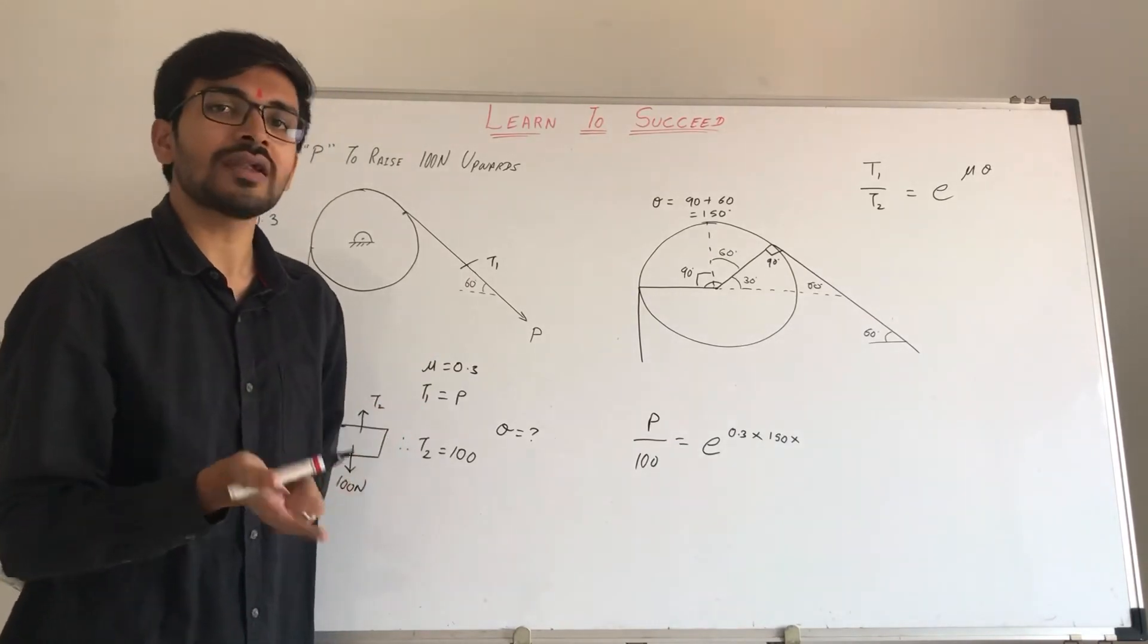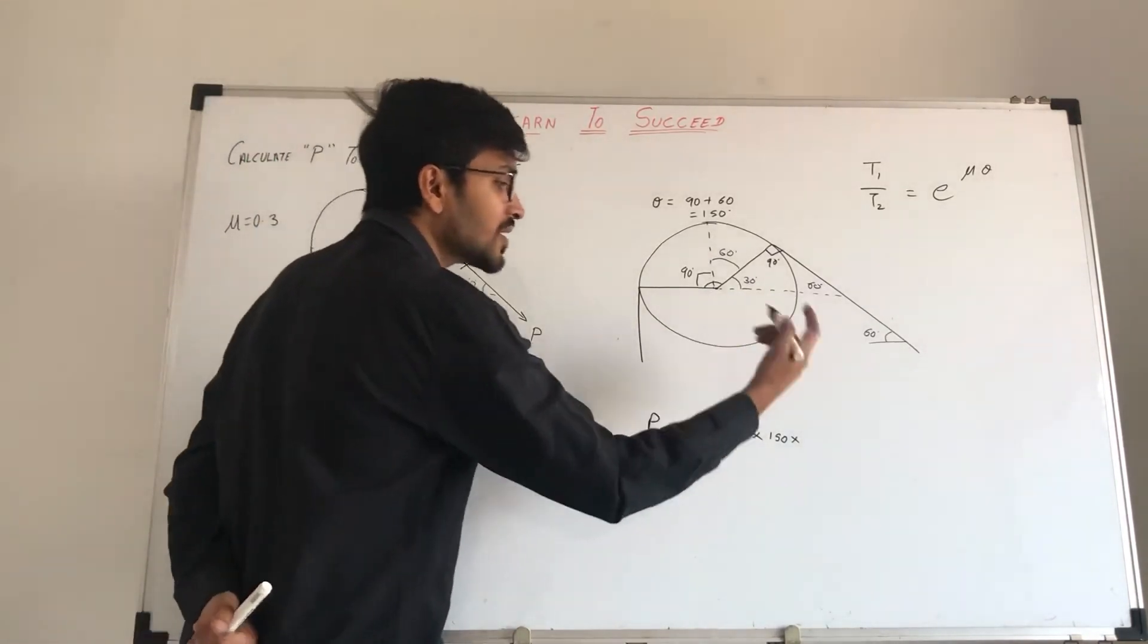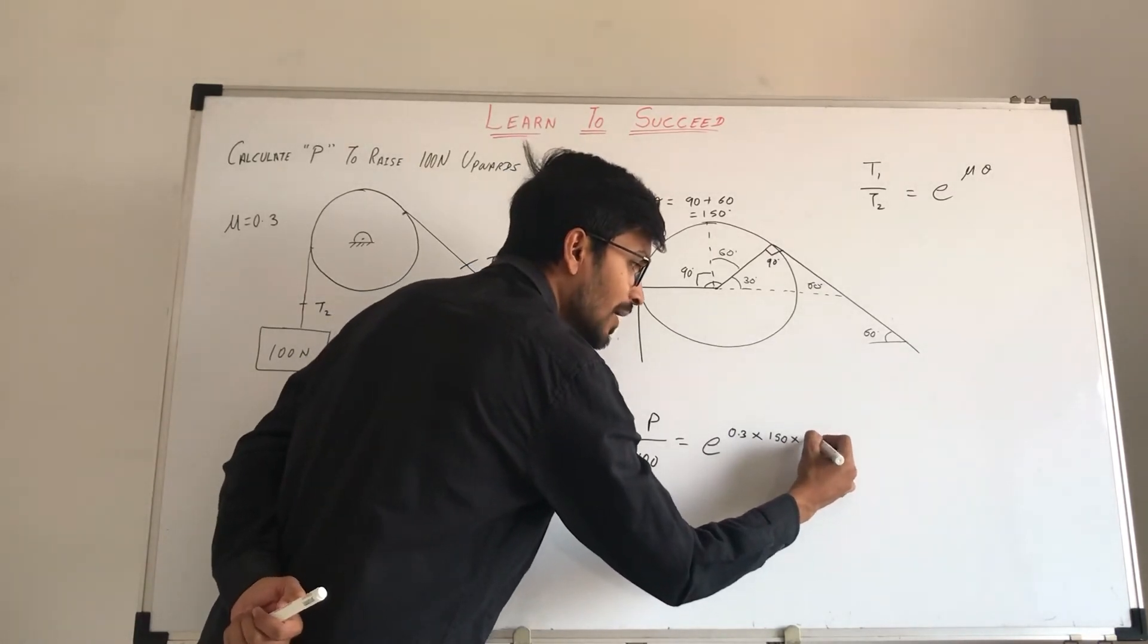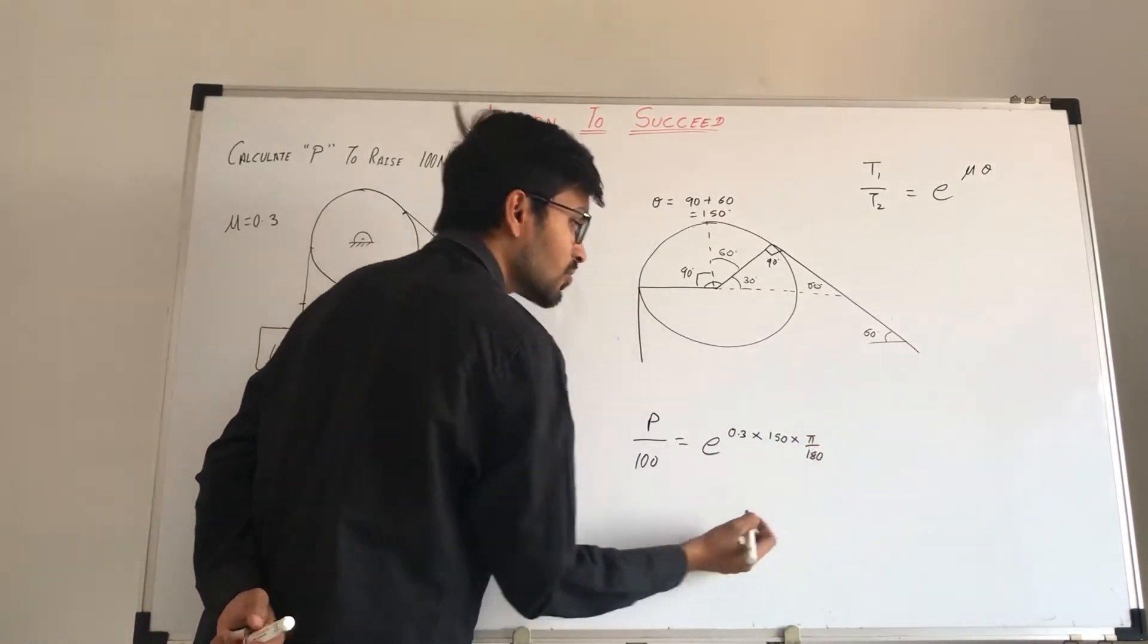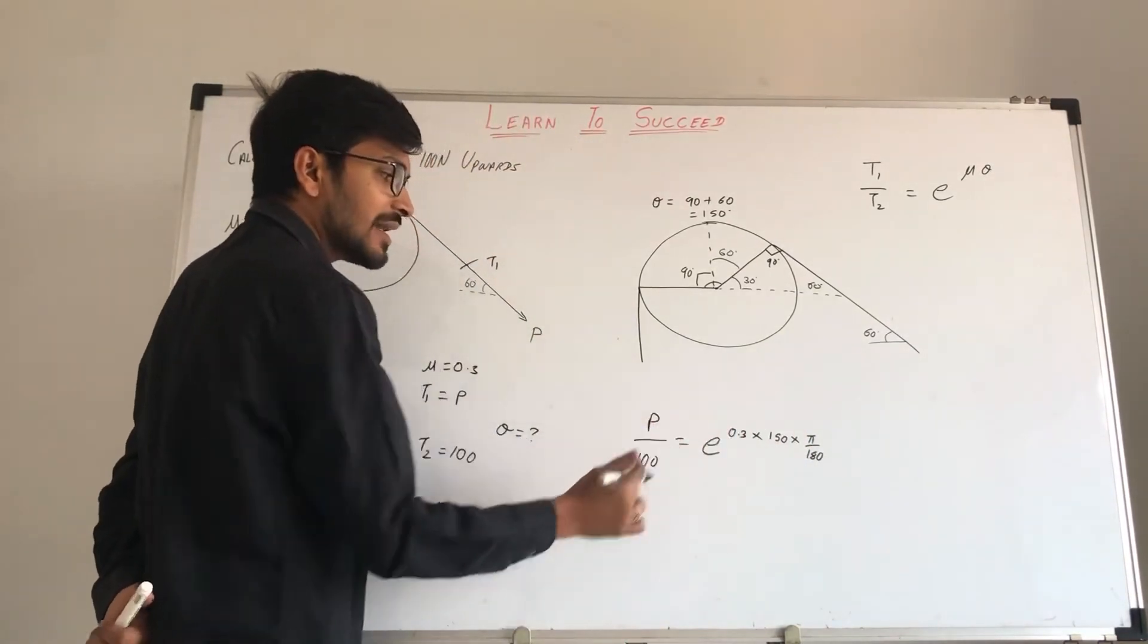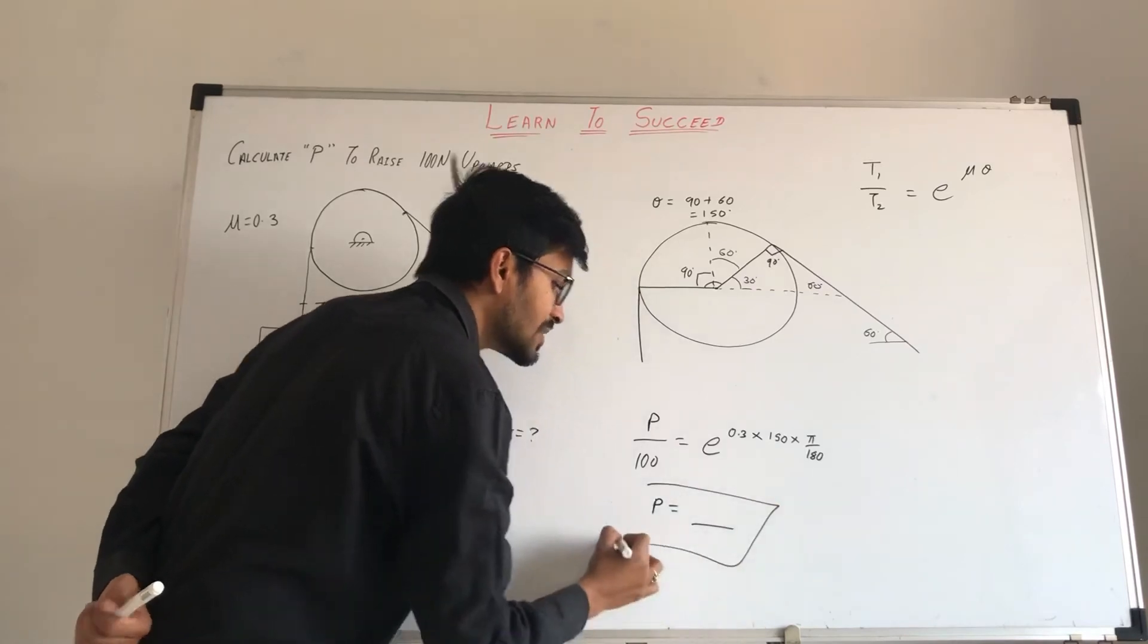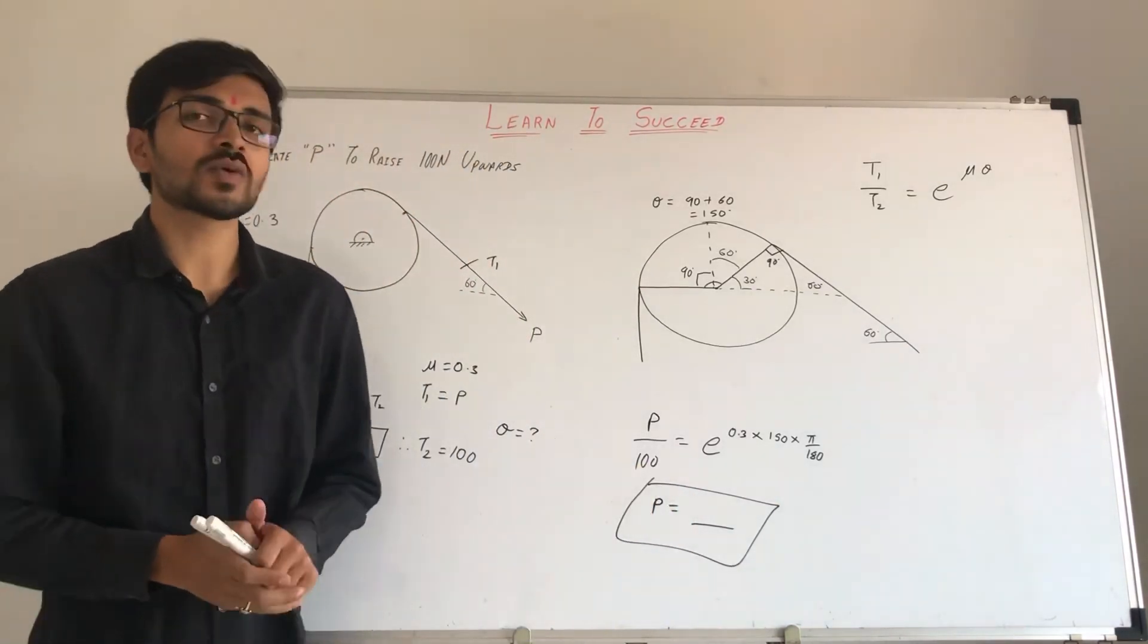When we put these values, we have to put the angle in radians. We have to convert the degree to radians. We have to multiply by pi by 180. Now if you put it directly in the calculator, you will get the value of P. And this is your final answer.